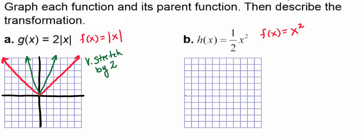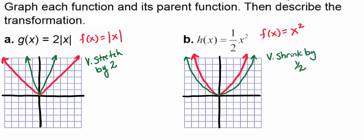So here we go and we're going to sketch our graph. And we had our parent function. And then we had our h of x, which was wider than our parent function. So we had a vertical shrink by 1 half.